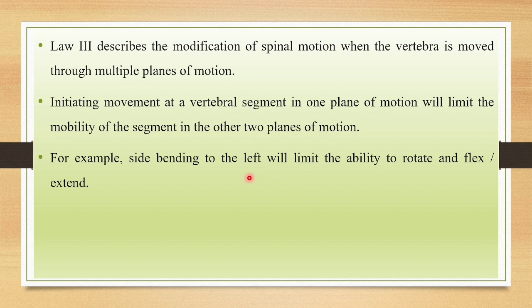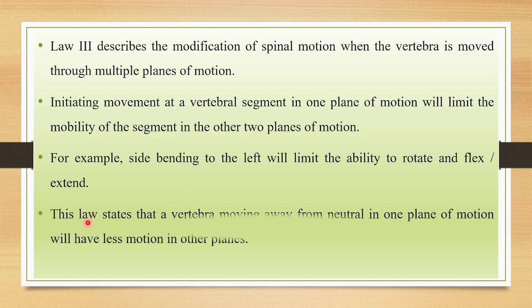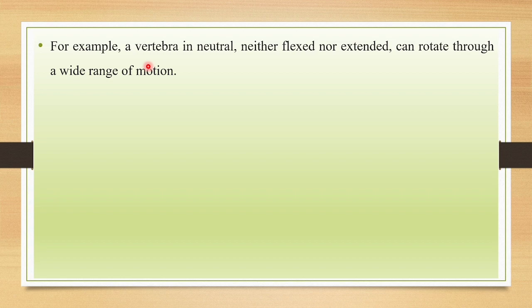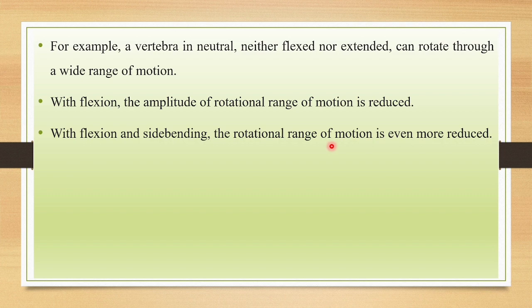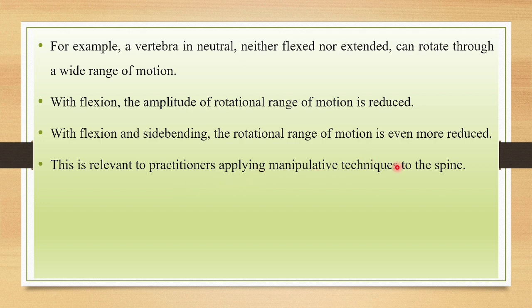For example, side bending to the left will limit the ability to rotate and to flex or extend the spine. This law states that a vertebra moving away from neutral in one plane of motion will have less motion in the other planes. For example, a vertebra in a neutral position — neither flexed nor extended — can rotate through a wide range of motion. With flexion, the amplitude of rotational range of motion is reduced, and with flexion and side bending combined, rotation range is reduced even further.